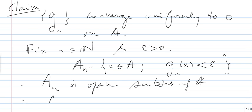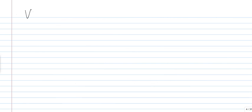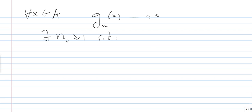Note that An+1 is bigger than An, because the Gn's are decreasing — so these sets are getting bigger and bigger. For any x in A, we know that Gn(x) goes to 0 pointwise. Therefore, there exists n0 such that Gn0(x) is less than epsilon, which tells us that x belongs to An0.